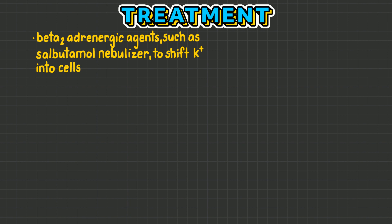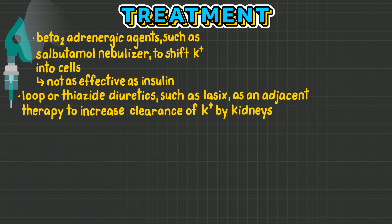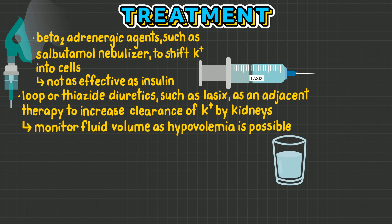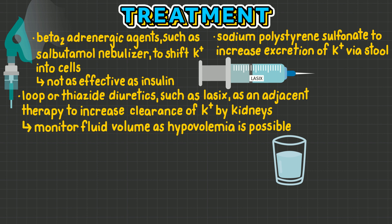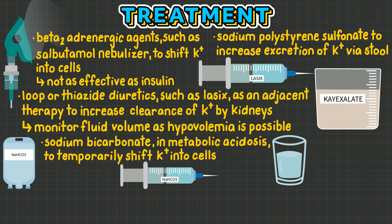Beta-2 adrenergic agents, such as a salbutamol nebulizer, may also be administered as they assist potassium into cells, but are not as effective as insulin. Loop or thiazide diuretics, such as Lasix, may be used as adjunct therapy to increase clearance of potassium by the kidneys; it is important to monitor fluid volume with this therapy to prevent hypovolemia. Sodium polystyrene sulfonate, also known as K-exalate, can be used to increase excretion of potassium in stool. Sodium bicarbonate can be used in metabolic acidosis to temporarily shift potassium into cells.